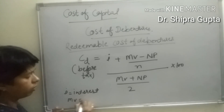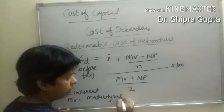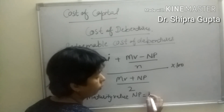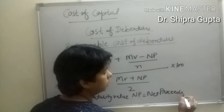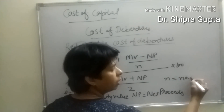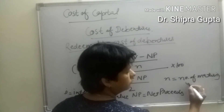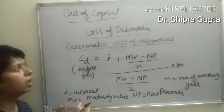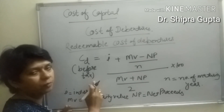MV stands for maturity value, NP stands for net proceeds, and small n stands for number of maturity years. By applying this formula we can calculate redeemable cost of debentures before tax.